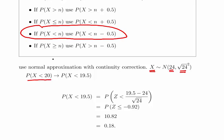Using our correction factor, we're going to restate the problem as X less than 19.5. This is the Poisson, and this is the normal approximation of that using a correction factor.